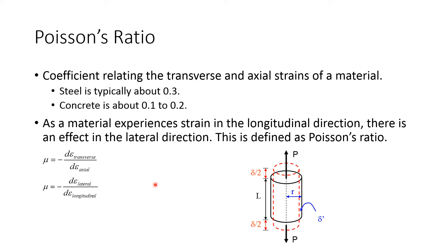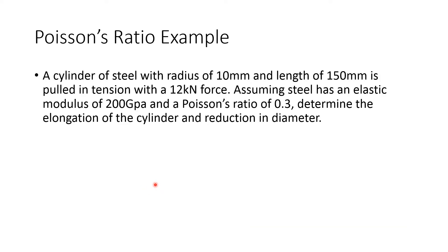So this is Poisson's ratio. How to use Poisson's ratio in the context of a problem. Here's an example. So a cylinder of steel with a radius of 10 mm and a length of 150 mm is pulled in tension with a 12 kN force. Assuming steel has an elastic modulus of 200 GPa and Poisson's ratio of 0.3, determine the elongation of the cylinder and reduction in diameter.